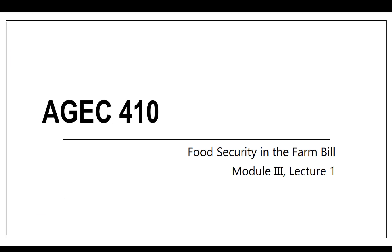Let's begin module three — it'll only be me lecturing, I apologize. I didn't have any other good material because this is such a huge topic. We're going to spend this module talking about food assistance or food security. It has lots of names — the classic would be welfare or low-income assistance programs — but really focused on the food security and nutrition part, where it interacts as direct agricultural policy.